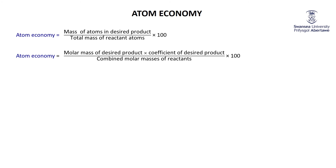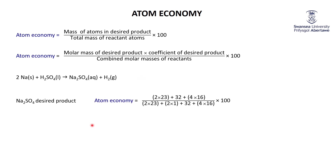For our reaction, if sodium sulfate (Na2SO4) is the desired product, its molar mass is (2×23 + 32 + 4×16 = 142). The combined molar mass of all reactants is: 2×23 for Na, plus 2×1 for H2, plus 32 for S, plus 4×16 for O4, giving 144. So the atom economy is 142/144 × 100 = 98.6% — we're only wasting 1.4% of starting material mass.